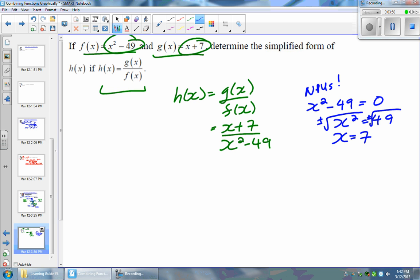Therefore, I'm going to get two non-permissible values. One at 7 and a second at negative 7. So these are my non-permissible values. So make sure you're stating those when you are dividing functions.